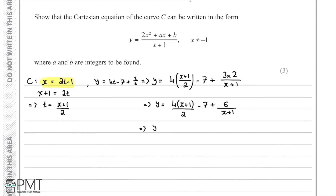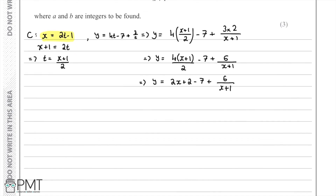Tidying this up: the 4 and 2 cancel to give 2(x+1), which expands to 2x + 2. Subtracting 7 and keeping the final term, we collect like terms: 2x + 2 - 7 = 2x - 5. So y = 2x - 5 + 6/(x+1).